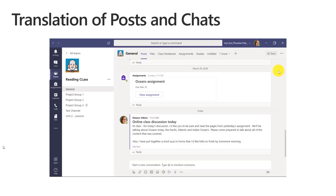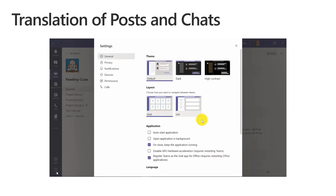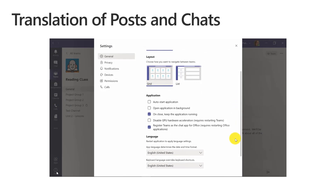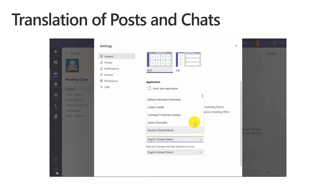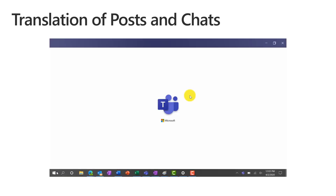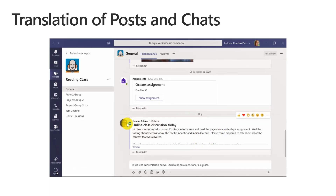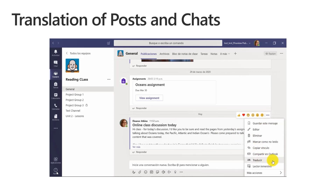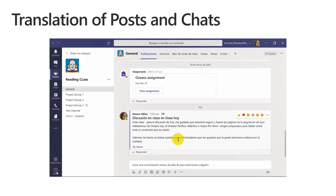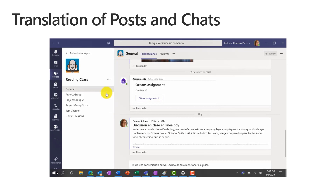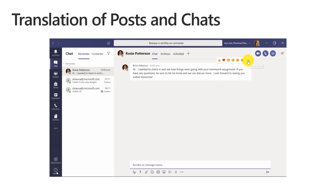The last one I'll show is translation of posts and chats. Note that your IT administrator has to enable this first. I'll click on my photo at the top and go to settings. Let's say I'm a student that speaks Spanish at home — I can scroll down and change my language to Spanish and save and restart. Now I'm back in and I have a message from my teacher. I go to the dot-dot-dot menu, click translate, and that message is now translated into Spanish so I can read it at home. This also works for chat — I go to the dot-dot-dot menu, click translate, and it translates that message into Spanish. Really great for students that might not read the native language as well, and also useful for their parents.